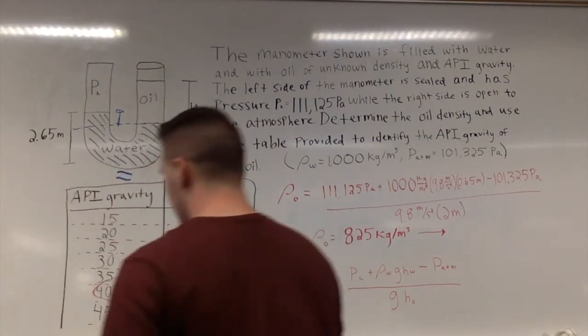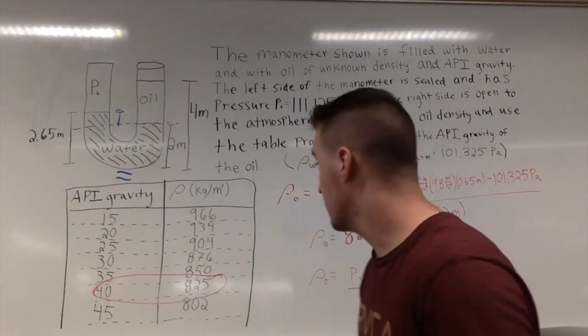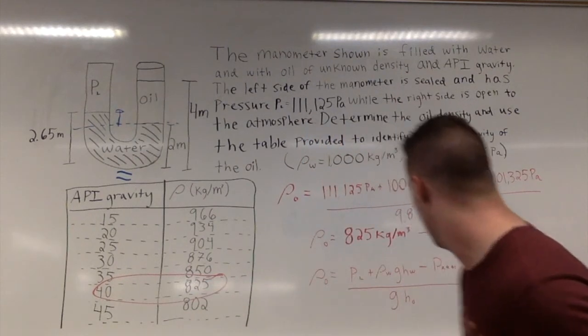We see that that corresponds to an API gravity of 40.